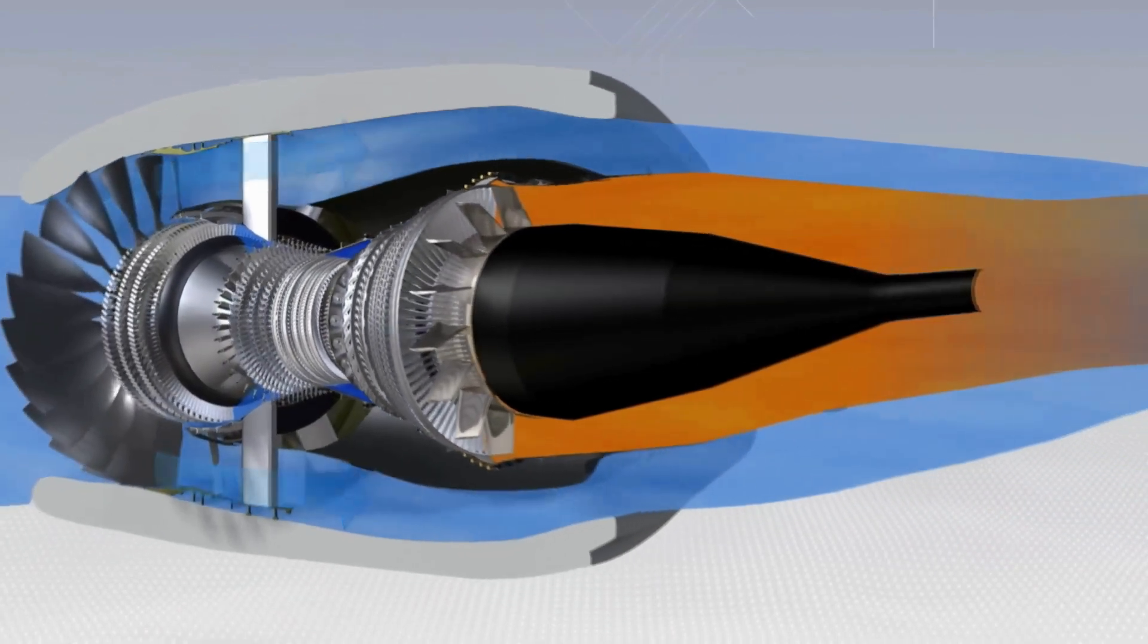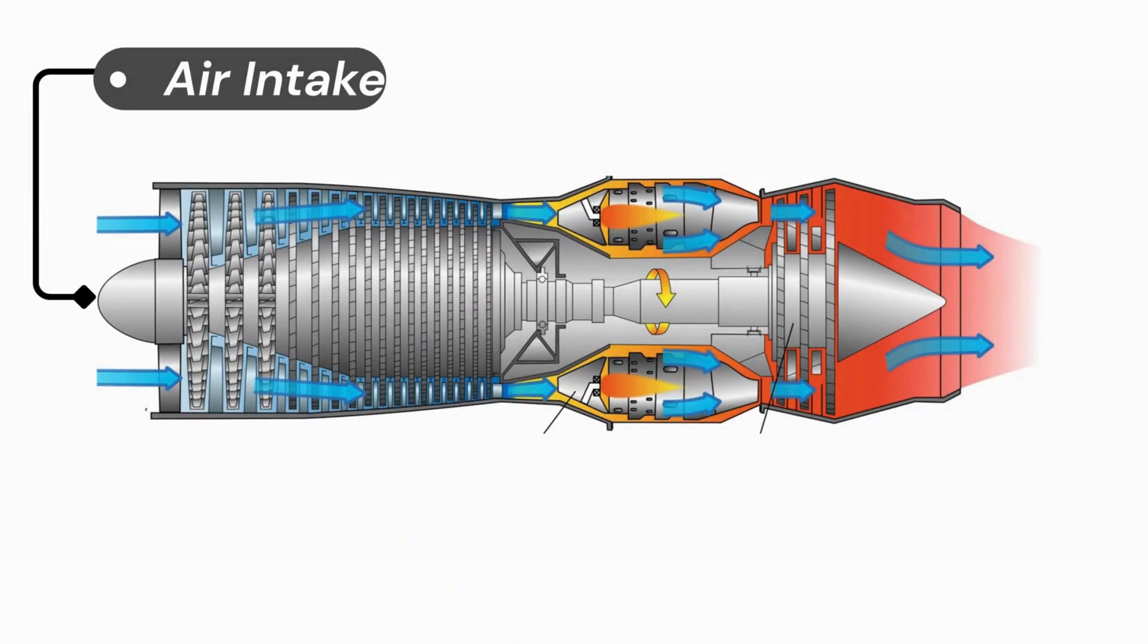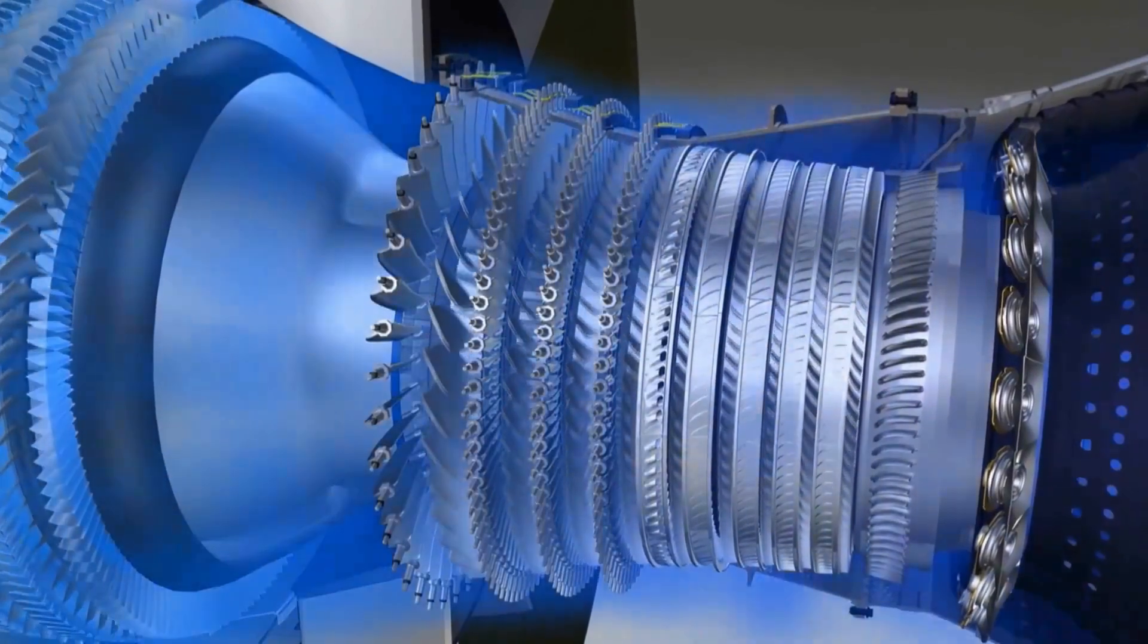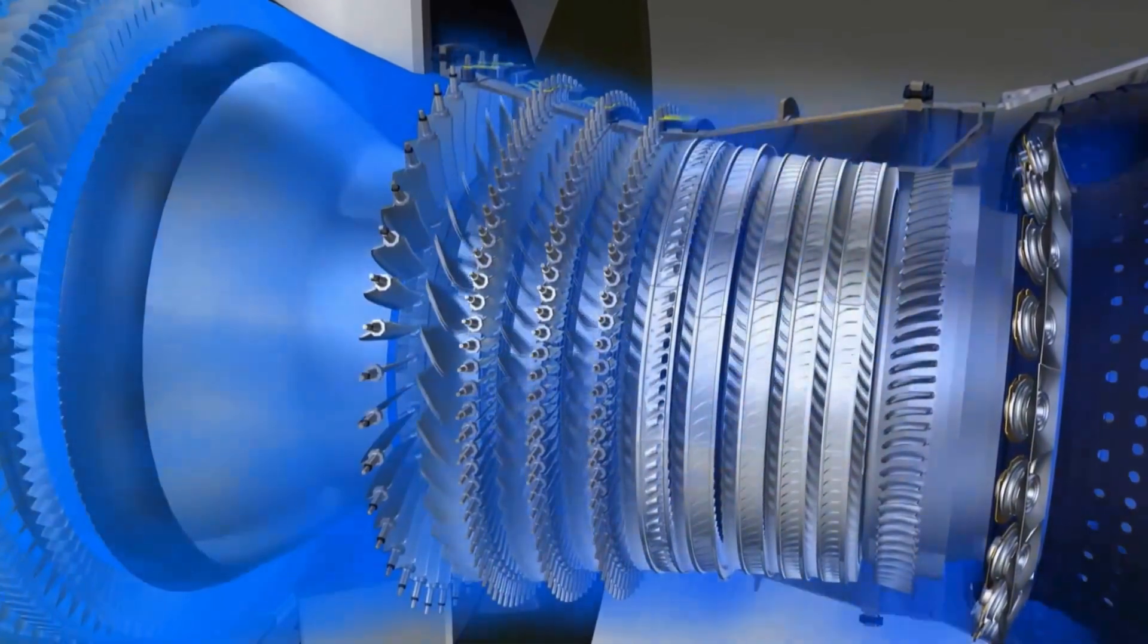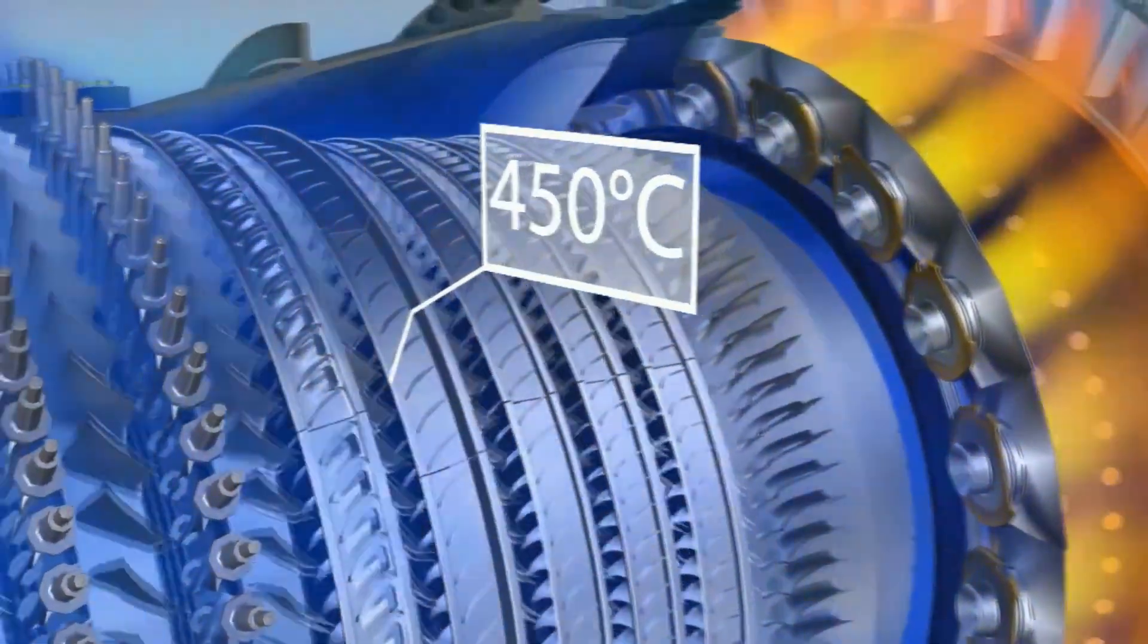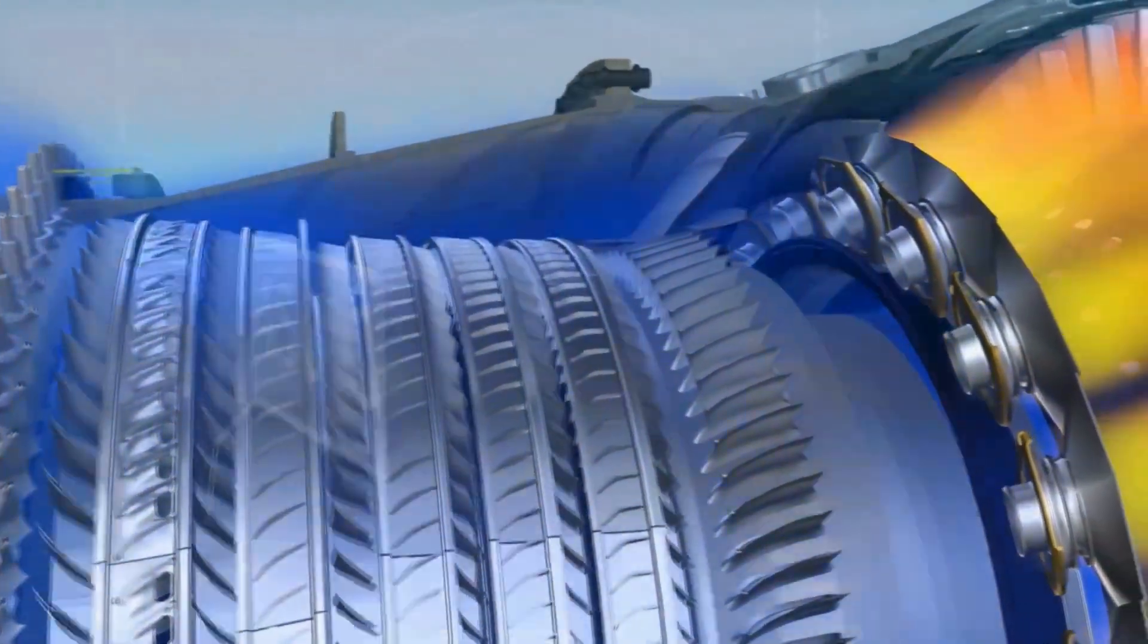This controlled airflow is essential for stable and efficient engine performance. Next up is the compressor. Here the slowed air is squeezed tightly, dramatically increasing its pressure and temperature. The result: a dense, superheated stream of air perfect for combustion.